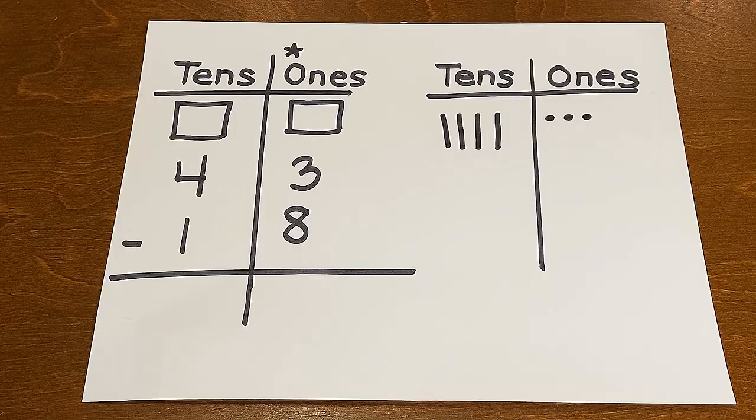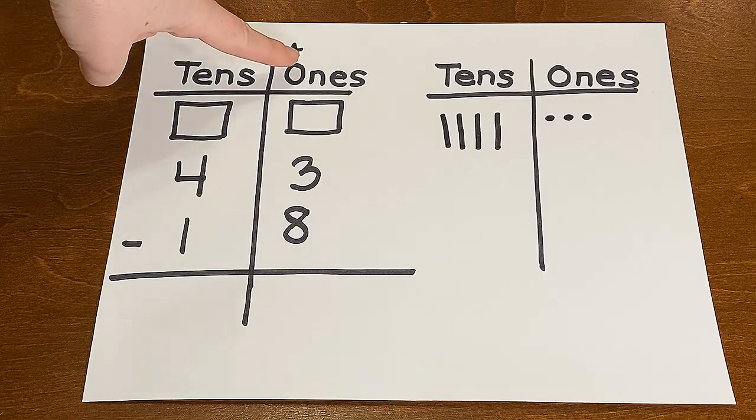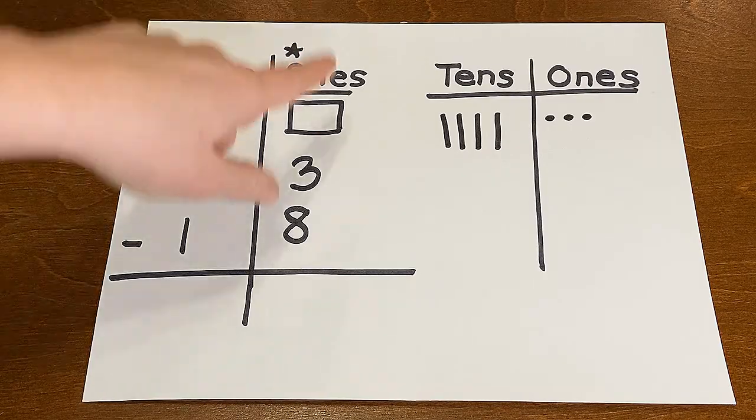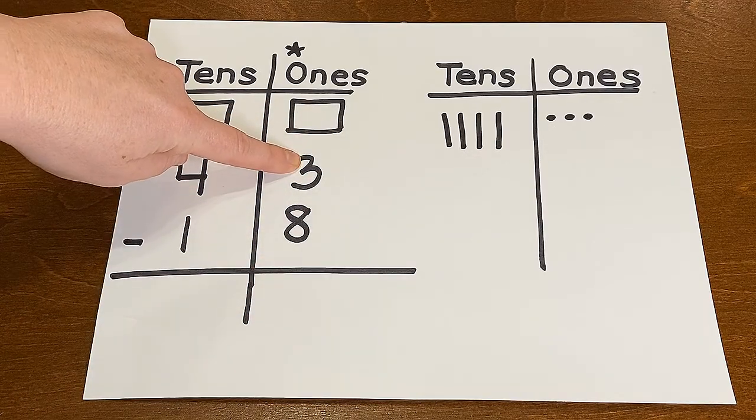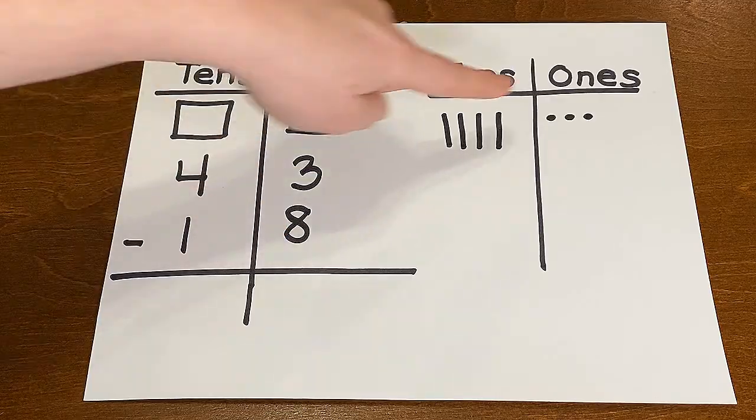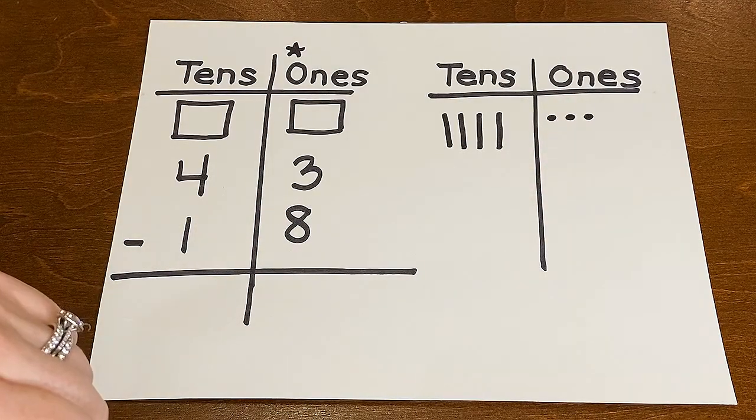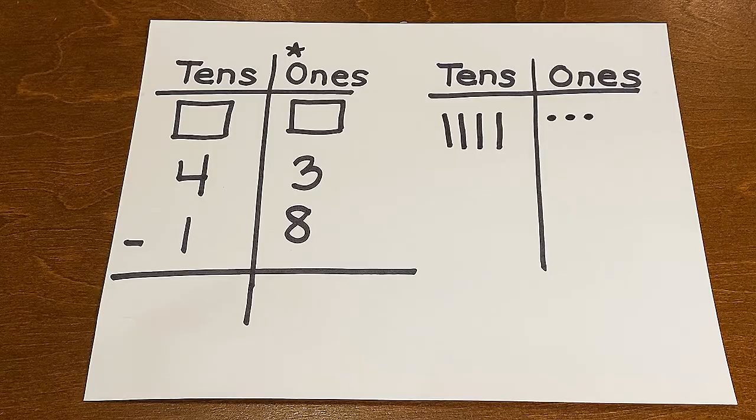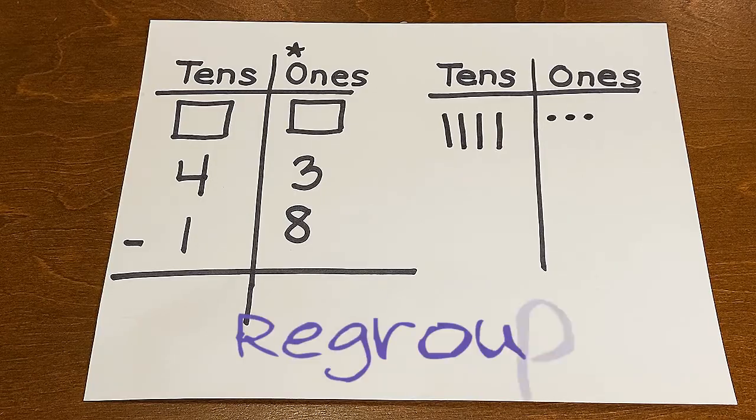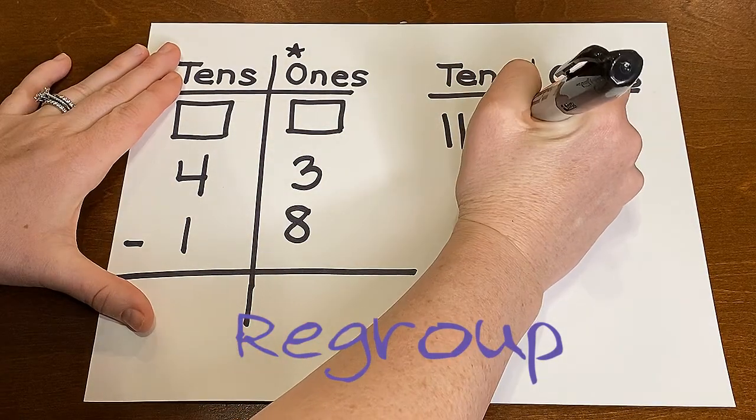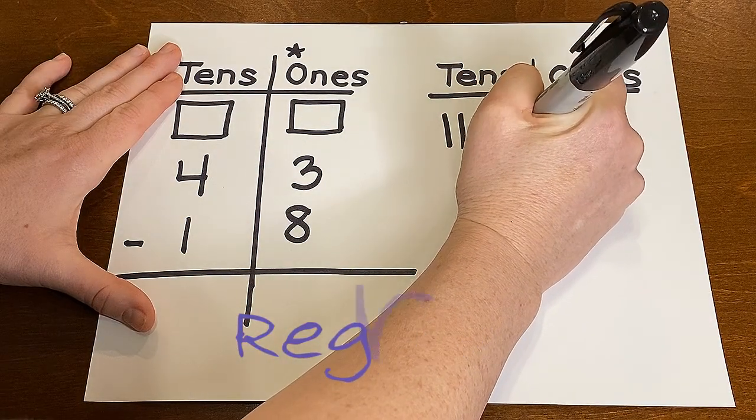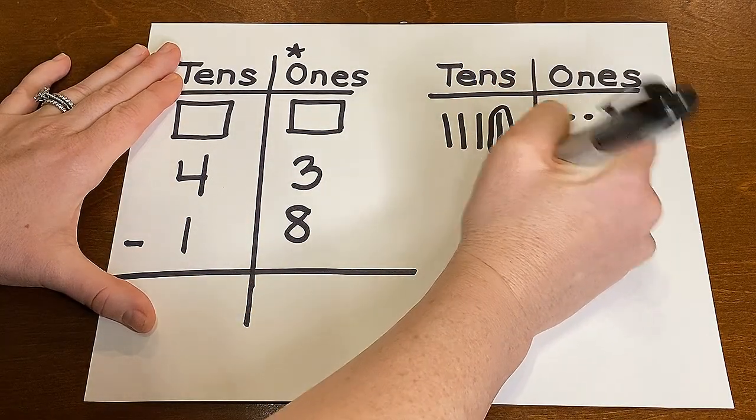All right. Now, because I jumped the gun before, we're in the ones column. So ones column here. Reading it top down. Three take away eight. Hmm. Three take away eight. Can I do that? No, I can't. So here comes that magic word. It's time to regroup. And I need to regroup one ten as ten ones.